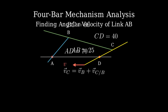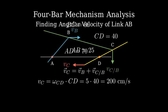Let's visualize these velocities. The velocity of point C, V underscore C, is perpendicular to CD and is found using V underscore C equals omega underscore CD asterisk CD. V underscore C equals 5 radians per second asterisk 40 centimeters equals 200 centimeters per second. The velocity of B, V underscore B, is perpendicular to AB and V underscore C slash B is perpendicular to BC.